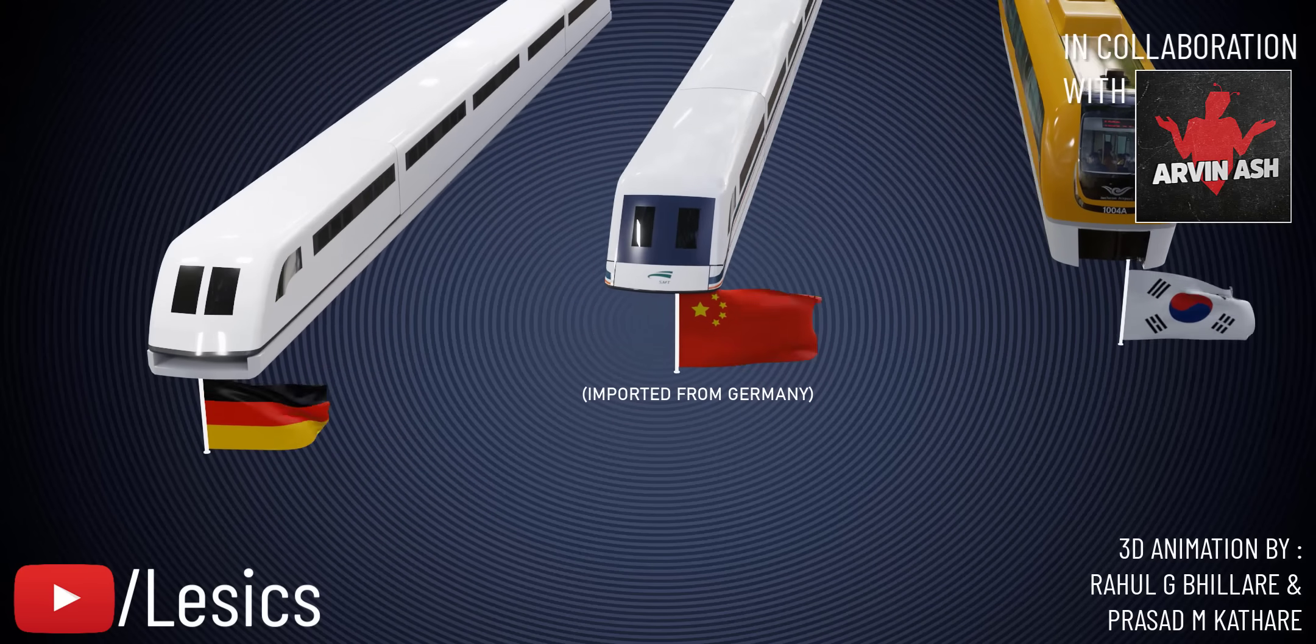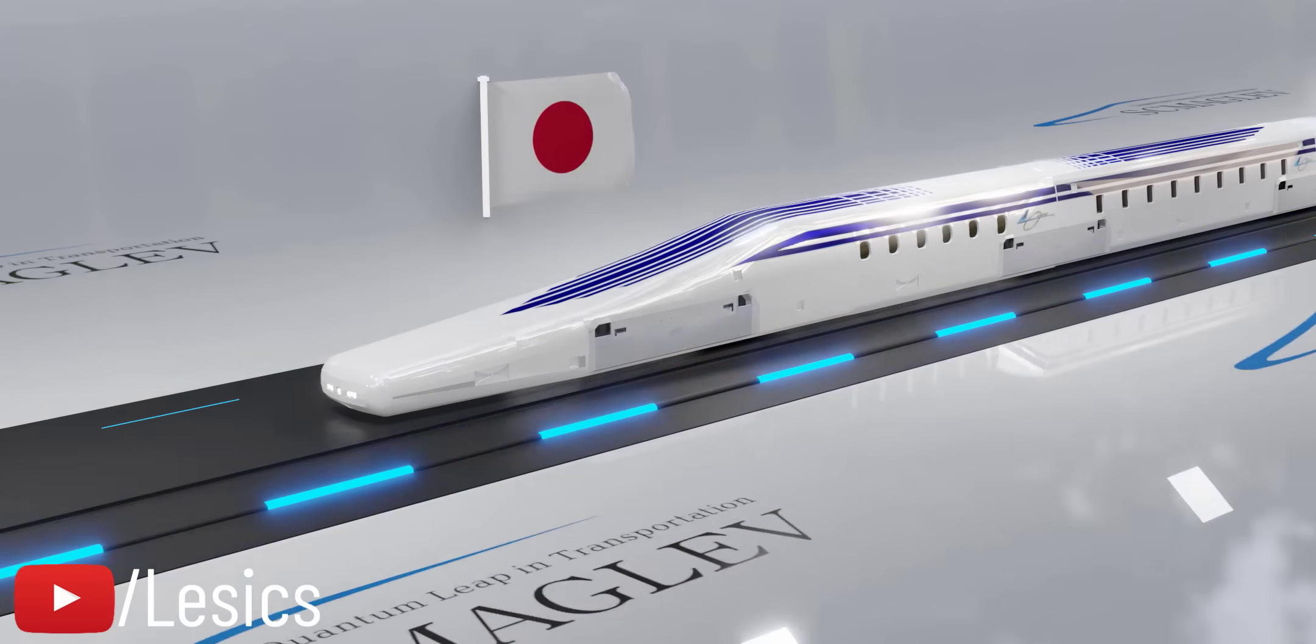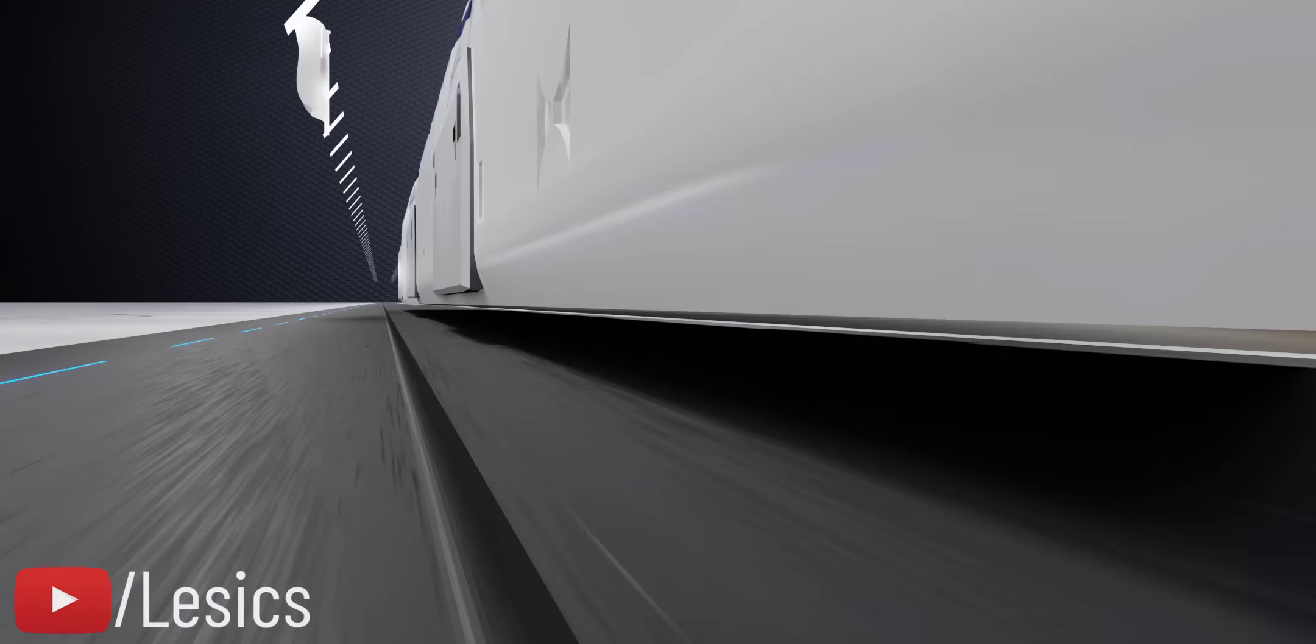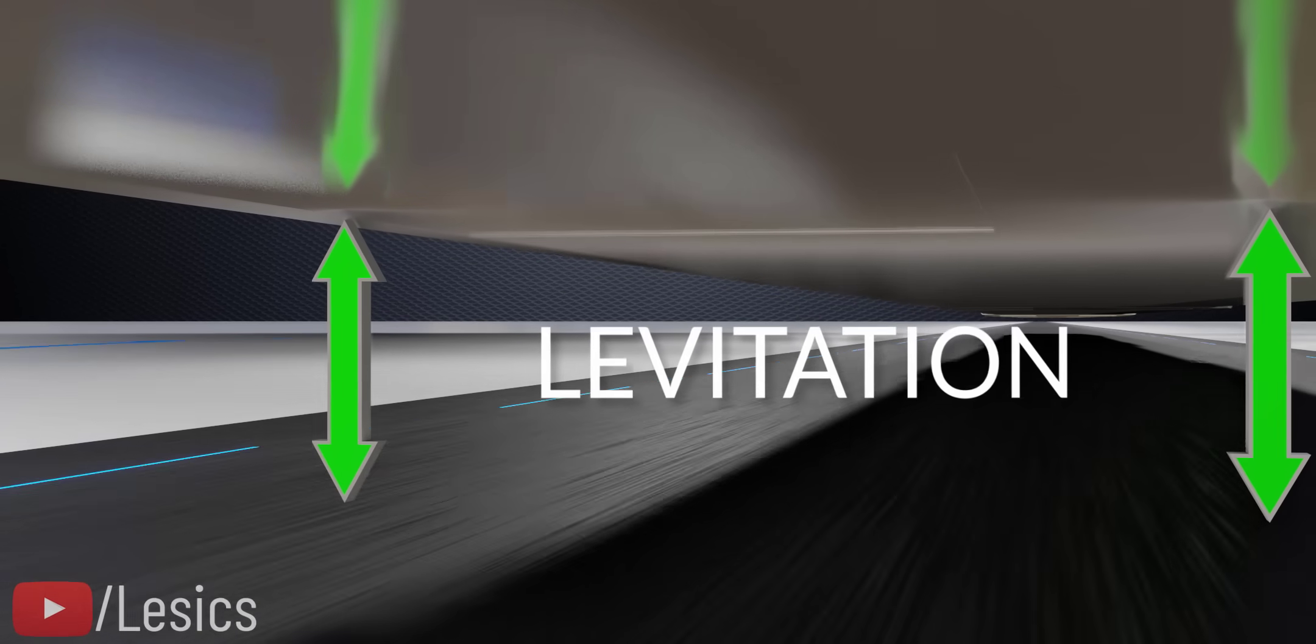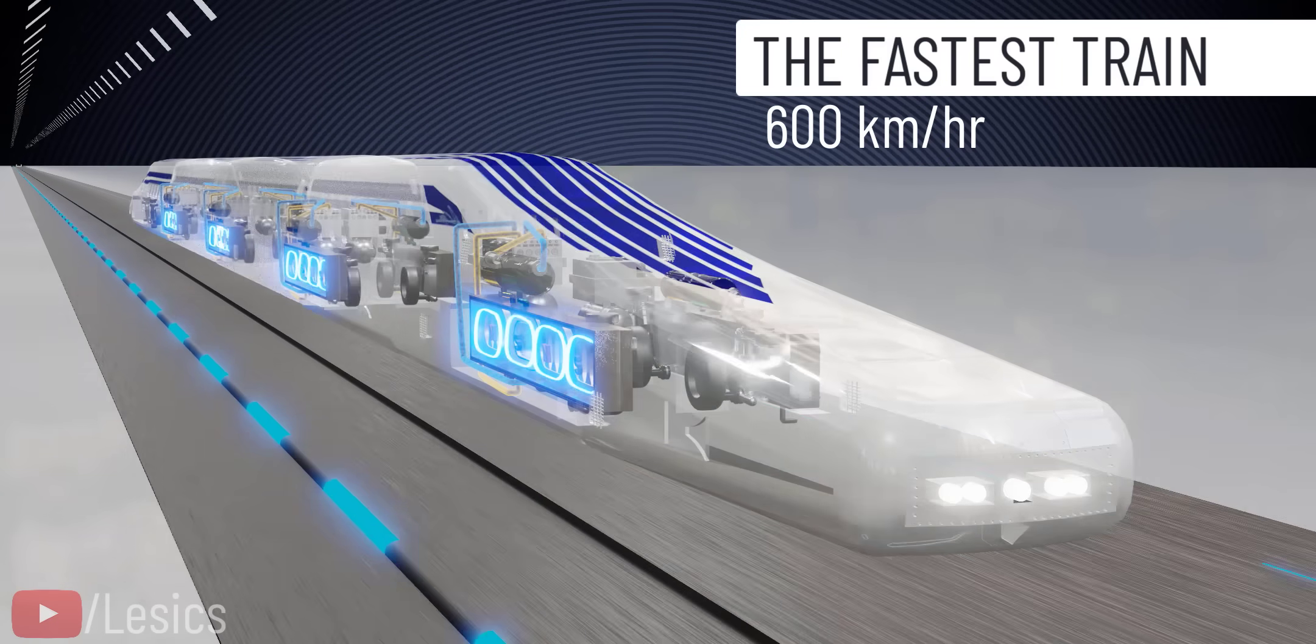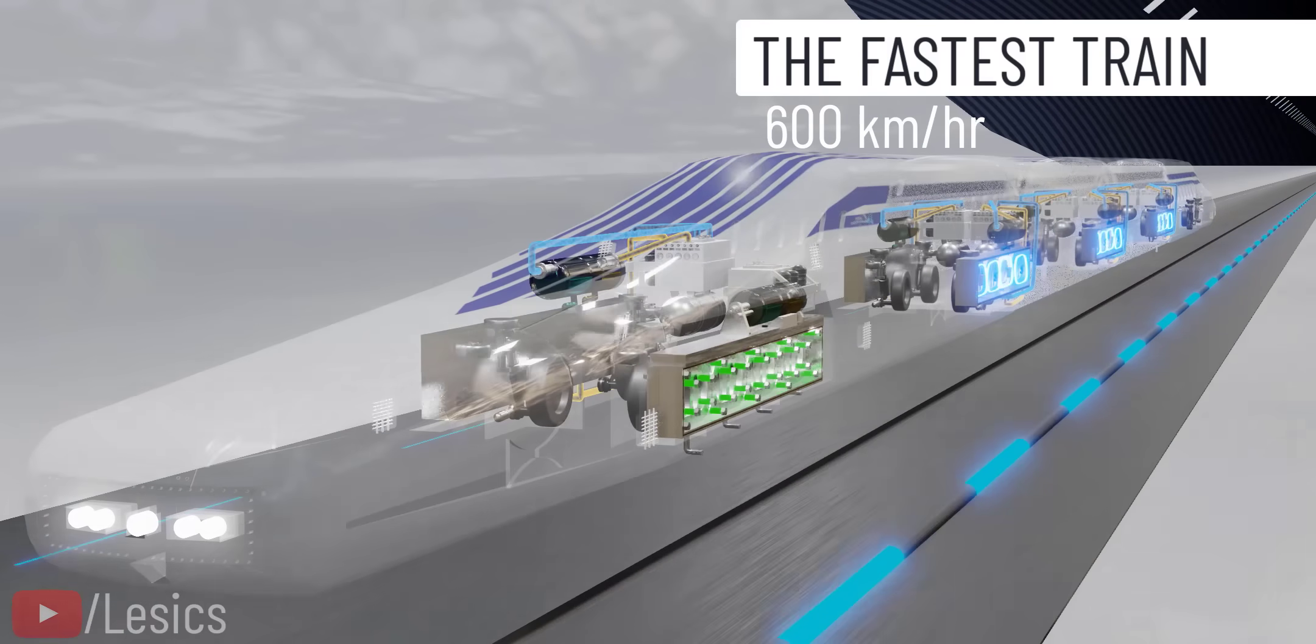Magnetically levitated trains are common nowadays. However, the Maglev train the Central Japan Railway Company developed is quite unique and superior to the other trains. Running at more than 600 km per hour, it has achieved the status of fastest train. This train uses superconducting magnets, which is why it is called SC Maglev.